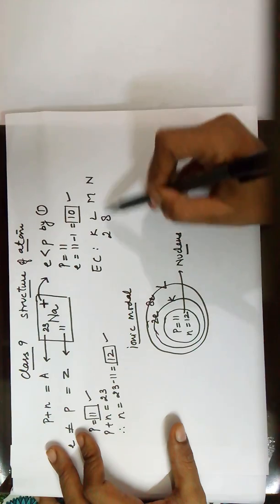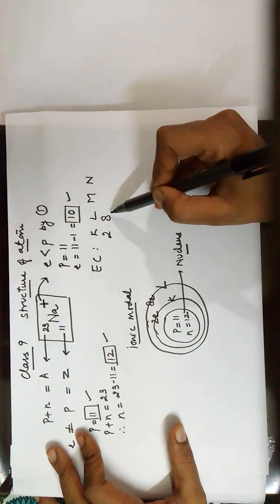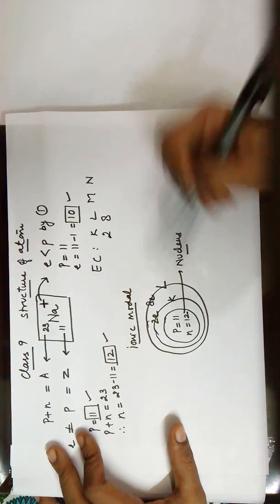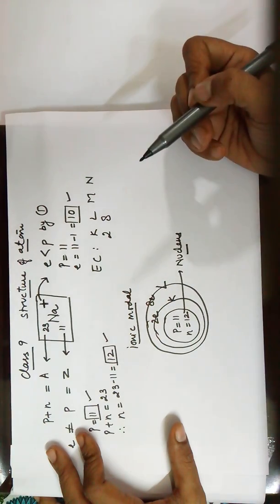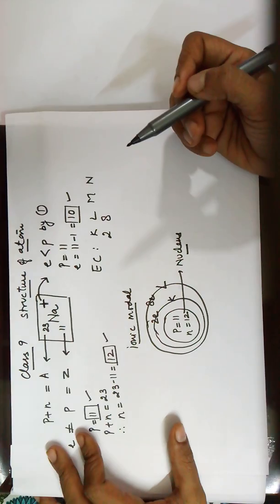These 10 electrons are to be arranged in different shells, where K shell gets two electrons, L shell gets eight electrons, and we have the electronic configuration. To draw an atomic model, you require the nucleus showing the protons and neutrons and the shells showing the electrons residing in them. Thank you.